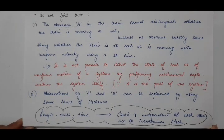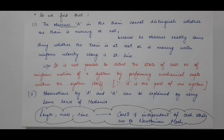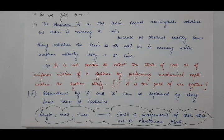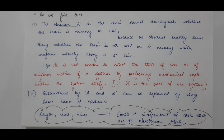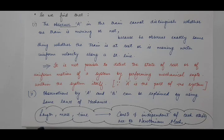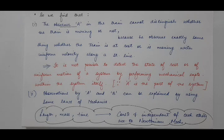Observer A gets the same result because he is part of that system — he is part of the train. The second conclusion is that the observations made by A and B are different when the train is moving, but these observations can be explained using the same laws of mechanics, because the laws of mechanics remain unchanged under uniform motion in any frame of reference. Also, according to Newtonian or classical mechanics, length, mass, and time are all constants and independent of each other. In the next lecture, we will discuss Galilean transformations, one of the most important topics and the basis of this and the next unit.